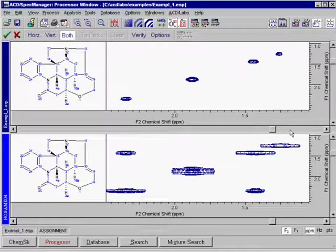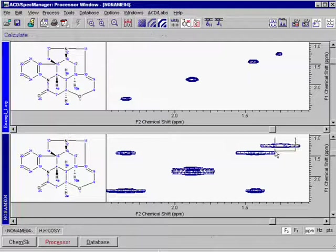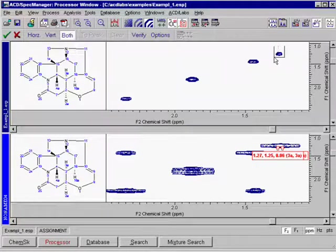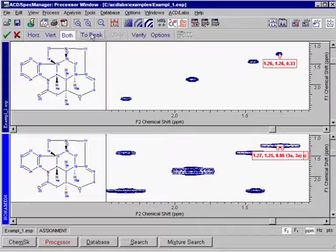To make an assignment, select a peak or peaks in the predicted spectrum, and then the corresponding peak or peaks in the experimental spectrum. Click the To Peak button and it's done.